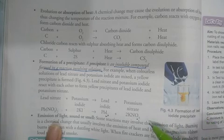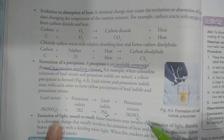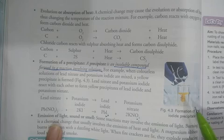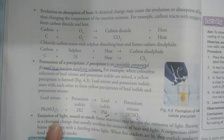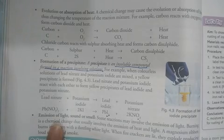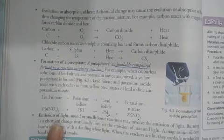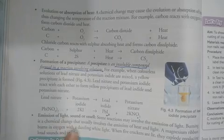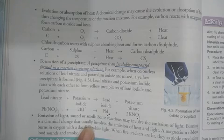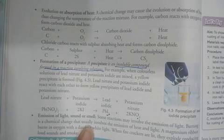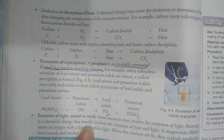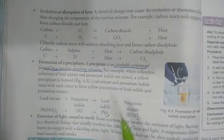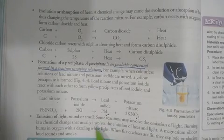The formation, evolution, and absorption of heat is also an example of a chemical reaction. If there is emission of light — for example, when we burn magnesium in the presence of oxygen, there is a dazzling white light. If there is any sound, or if you feel some smell when we burn lead nitrate, this is also a chemical reaction. Emission of light, sound, and smell are all indicators of a chemical reaction.